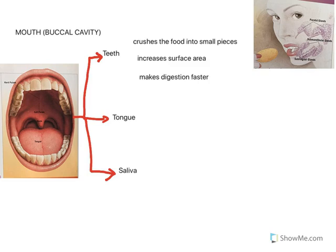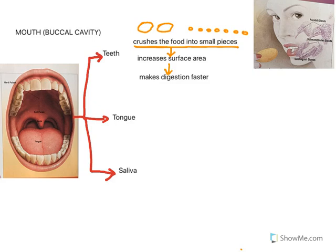The teeth bite and crush food into small pieces. When food is crushed into small pieces, the surface area increases. Large pieces of food are broken into many little pieces, hence the surface area increases. Due to the increase in surface area, digestion takes place faster — enzymes can act faster on the food.